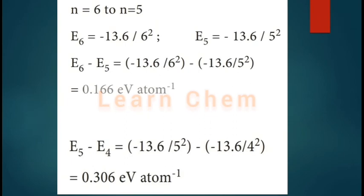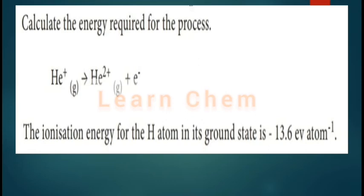Next problem: calculate the energy required for the process He⁺ → He²⁺ + e⁻. We are removing an electron from helium plus, converting it to helium 2 plus. The ionization energy for the hydrogen atom is given as −13.6 eV per atom.